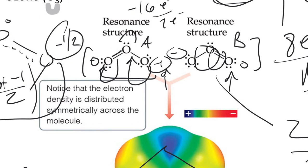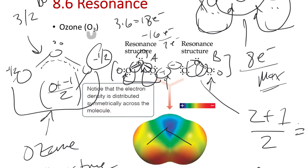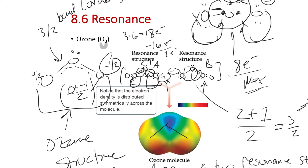We have two, four, six electrons - that's three pairs of electrons being spread across the one, two covalent bonds. So we have two sets of O-O bonds and then three pairs of electrons being spread across them.